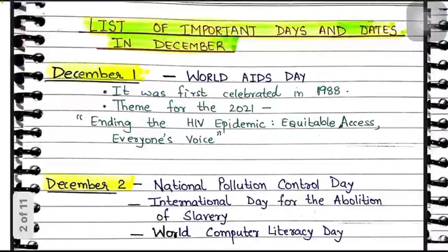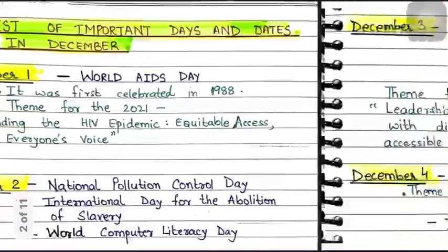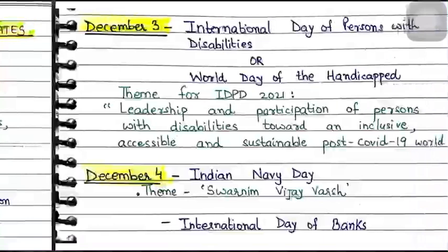If there is a question about when the Bhopal Gas Tragedy happened — do remember it was on December 2 or December 3, and we place it in 1984. The International Day for Abolition of Slavery aims to make people aware of modern slavery that works against human rights. World Computer Literacy Day aims to promote technological skills, especially in children and women. These are topics where add-on questions can be asked, so take note.